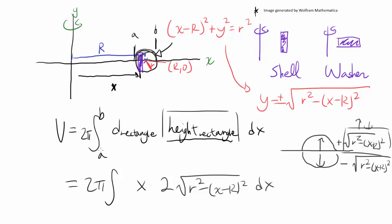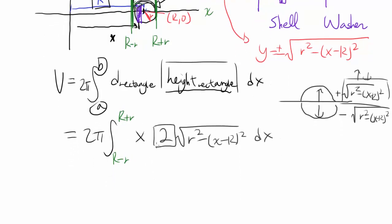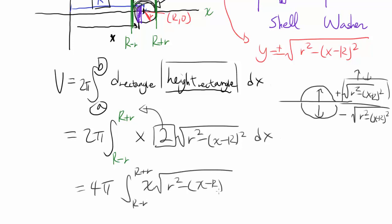Now we need the bounds A and B. The blue distances are to the center of the circle. We start at A = R − r, going back the radius of the circle from the center, and B = R + r. So we integrate from R − r to R + r, giving us 4π times the integral from R − r to R + r of x√(r² − (x − R)²) dx.